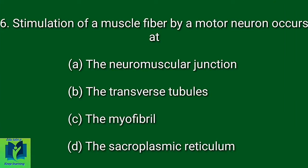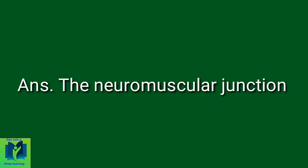Stimulation of a muscle fiber by a motor neuron occurs at dash. Option A: Neuromuscular Junction. Option B: Transverse Tubules. Option C: Myofibril. Option D: Sarcoplasmic Reticulum. Answer: Neuromuscular Junction.